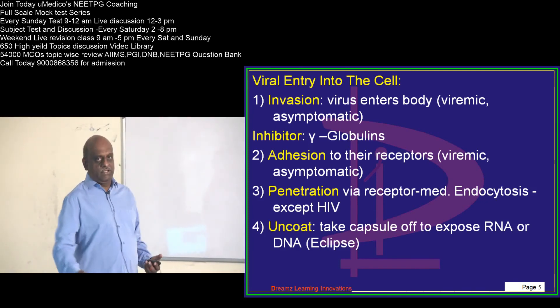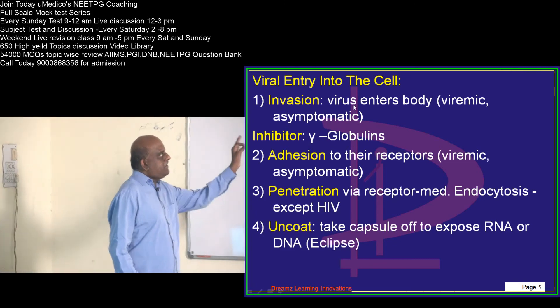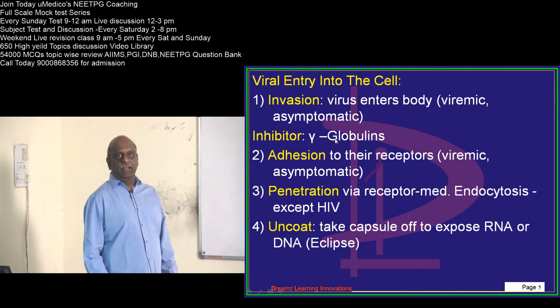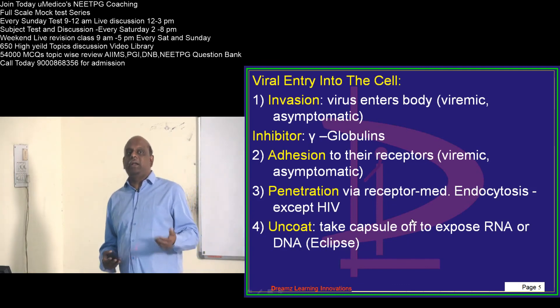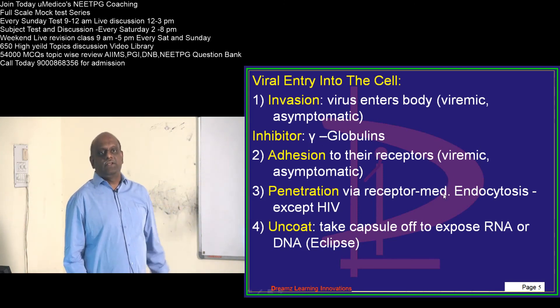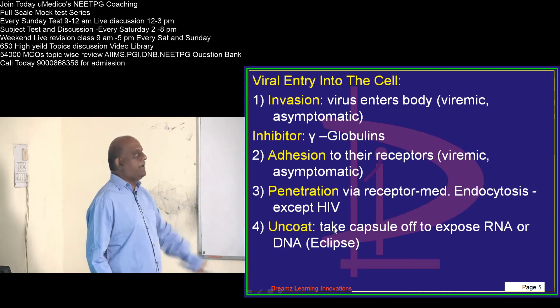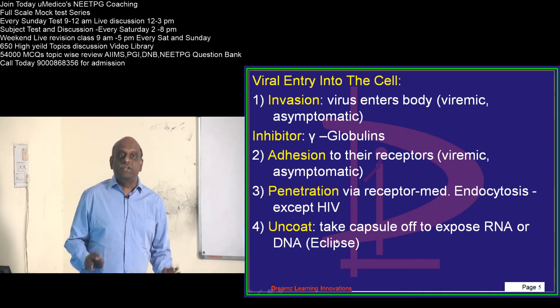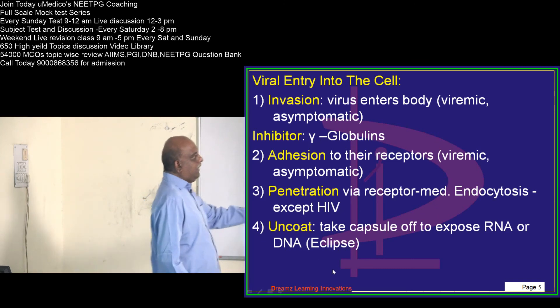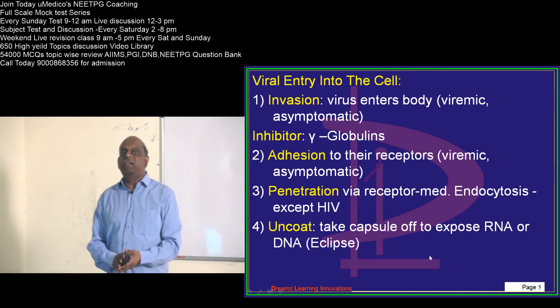Coming to viral entry into the cell. How does virus enter? Through invasion, where virus enters. You have a viremic phase during which the patient is asymptomatic. During that time, gamma globulins in the body will try to act as inhibitor for virus proliferation. Then they undergo adhesion to receptors. Even during that time, patient is asymptomatic. Then they penetrate by receptor-mediated endocytosis, except in HIV.